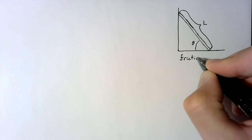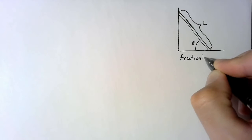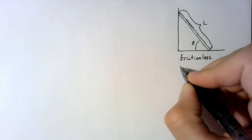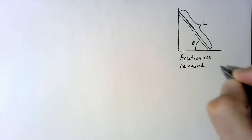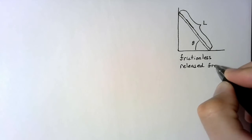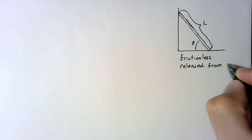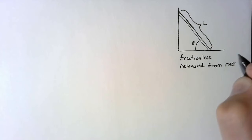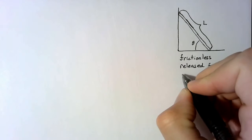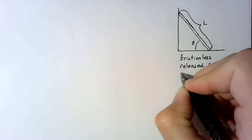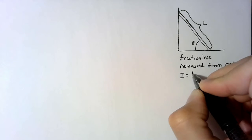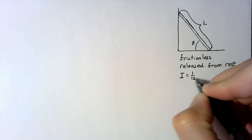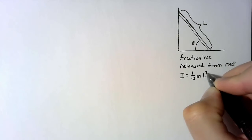First, we're going to say that all of the contacts are frictionless. Second, the rod is going to be released from rest, so as we're analyzing we don't have to worry about any initial velocity. And the last is a truth: for a long enough rod, the moment of inertia is about one twelfth mL squared.